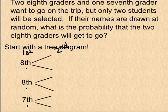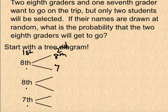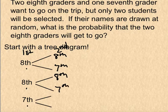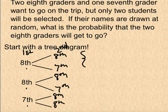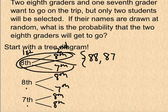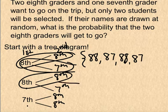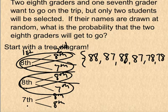On the second draw, if we got an 8th grader first, we could get another 8th grader or the 7th grader. Similarly, with the other 8th grader first, we could get an 8th or a 7th. If we pull a 7th grader first, we could get an 8th grader or another 8th grader. Listing the sample space: 8+8, 8+7, 8+8, 8+7, 7+8, and 7+8 — giving us 6 different outcomes.